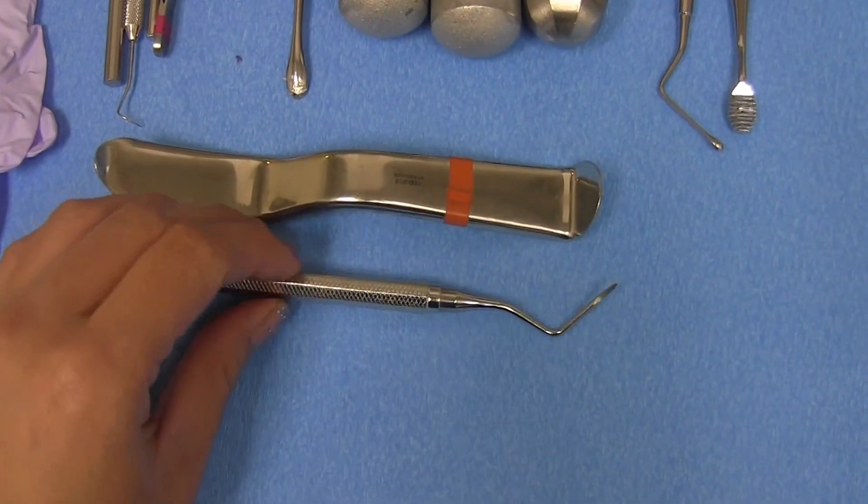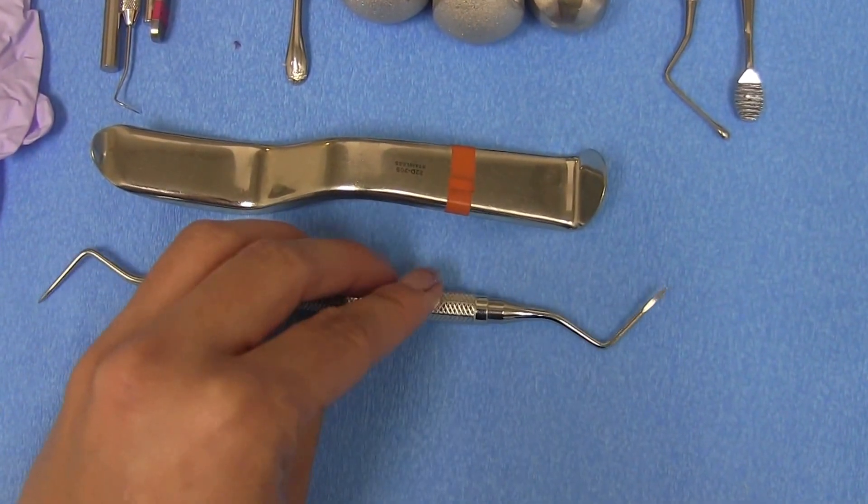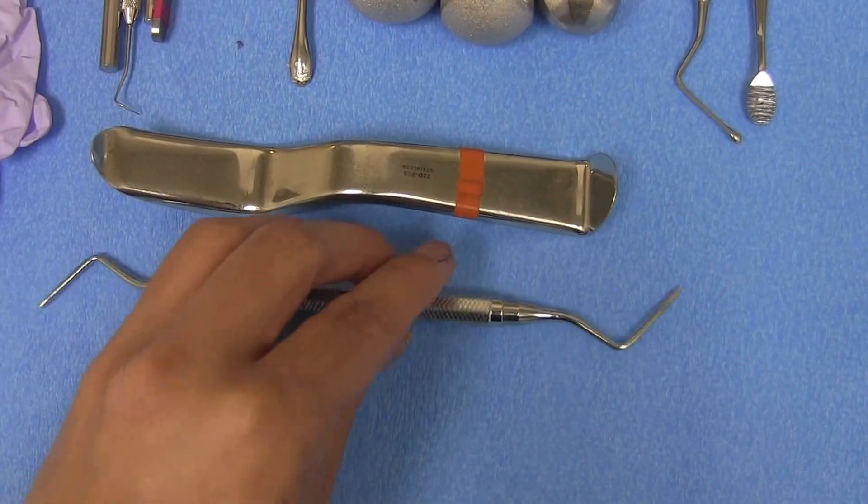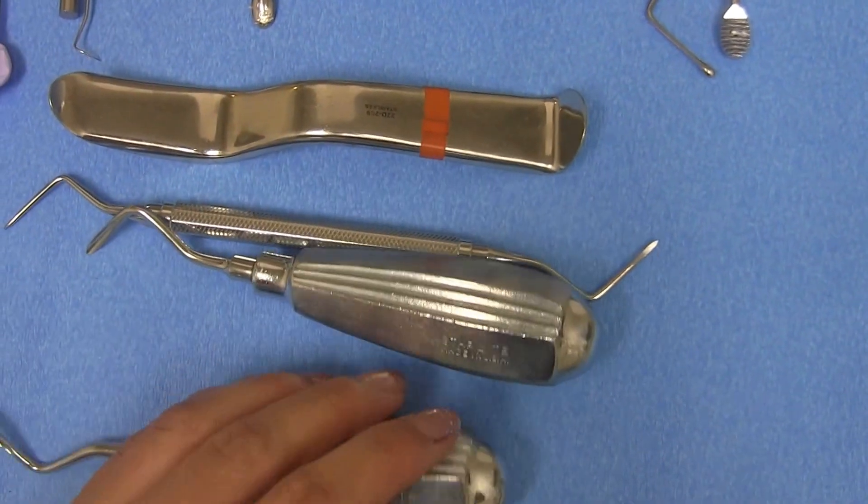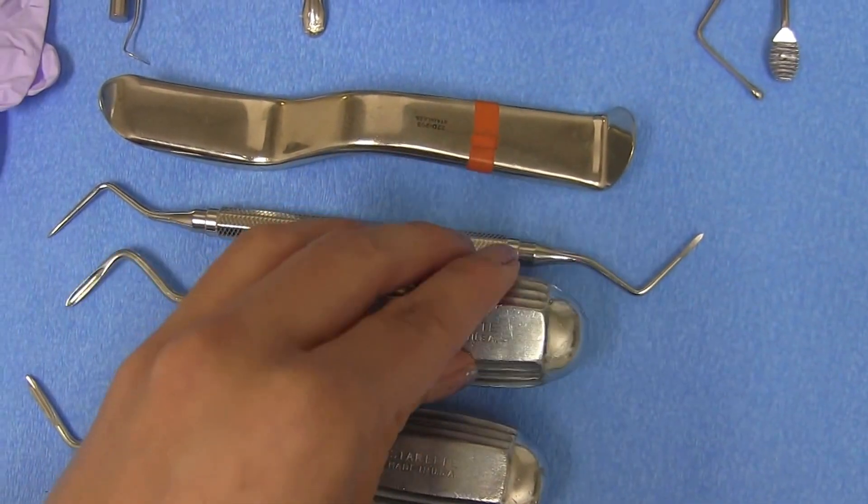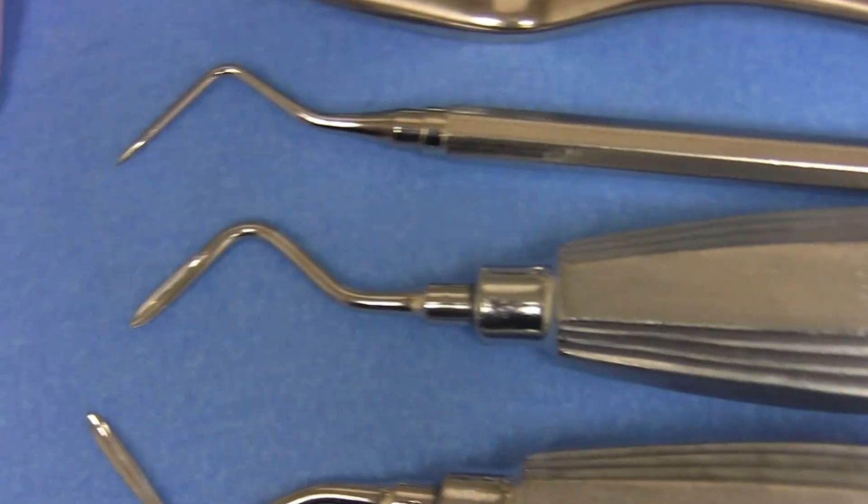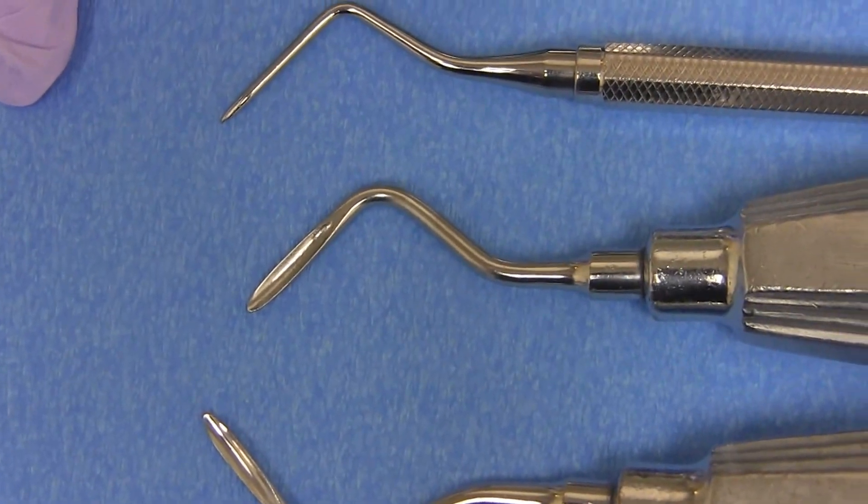This is a skinny root tip, which is double-ended. And then you have your fat root tip picks. And these have pointy ends on them. You can see there.